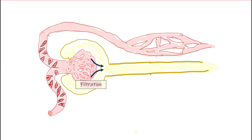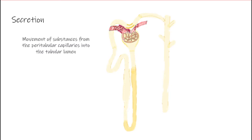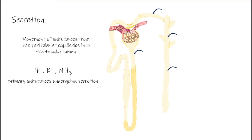Filtration is the movement of material out of the glomerulus into Bowman's space. Reabsorption is taking material out of the tubular lumen and putting it back into the peritubular capillaries. Secretion is when we are putting material back into the tubular lumen itself — occurring primarily in the proximal tubule and the distal portion of the nephron. The primary substances secreted include hydrogen ions, potassium ions, ammonia, and bicarbonate.